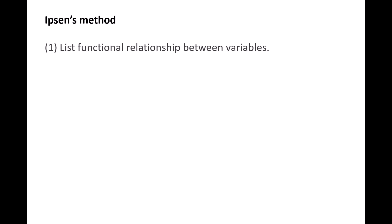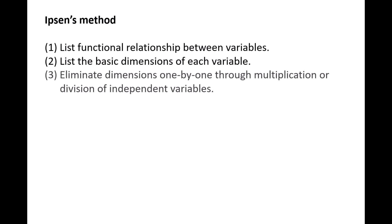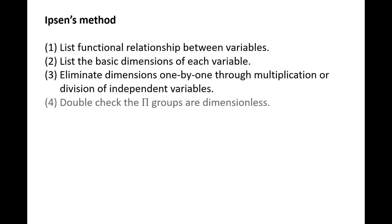The first two steps are the same as the method of repeating variables. We list the functional relationship between all the relevant variables, then we list the basic dimensions of each variable. In Ibsen's method, you can use either the FLT or MLT systems. The third step consists of eliminating the dimensions of all variables through multiplication or division of the independent variables. Finally, once a set of pi groups is obtained, you should double-check that the pi groups are indeed dimensionless.